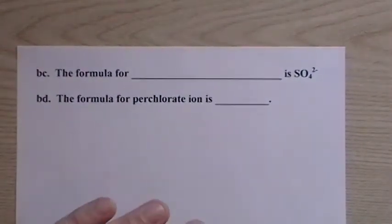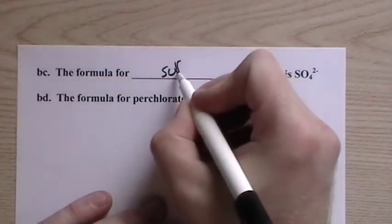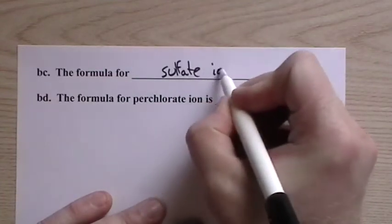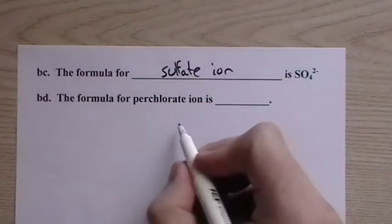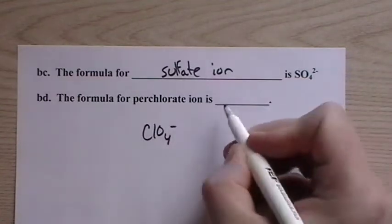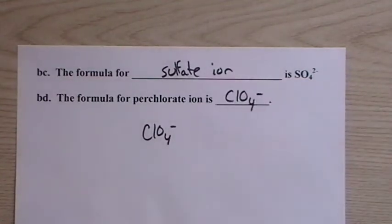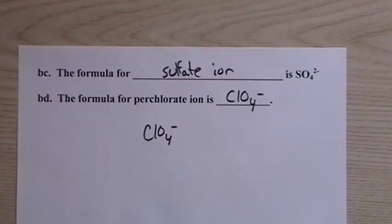Then we have the formula for SO4 2 minus. Yeah, sulfate ion. Sulfate ion. Formula for perchlorate ion, ClO4 minus. I'm not sure why I did it that way, but there you go. And that is the deal.